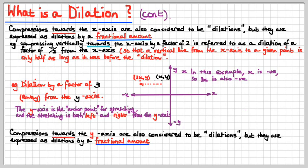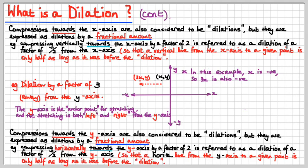Compressions towards the y-axis are also considered to be dilations, but as with the x-axis reasoning, they're considered to be dilations by a fractional amount. Compressing horizontally towards the y-axis by a factor of 2 is referred to as a dilation of a factor of one-half, because it goes into half its normal length from the y-axis — so a horizontal line from the y-axis to a given point is only half as long as it was before the dilation.